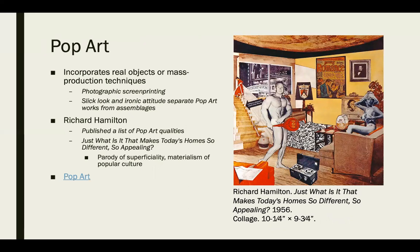Pop art incorporates real objects or mass production techniques. Around the 1950s, capitalism is booming, everything is being commodified, and art gets involved with that too. Photographic screen printing becomes popular, enabling uniform reproduction. Pop art is known for a sleek look and an ironic attitude that separates it from assemblage. Richard Hamilton published a list of pop art qualities and asked: 'What is it that makes today's home so different, so appealing?'